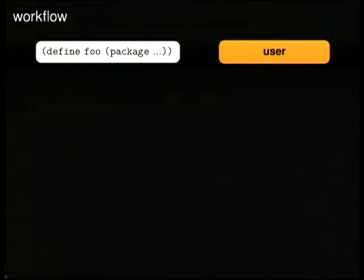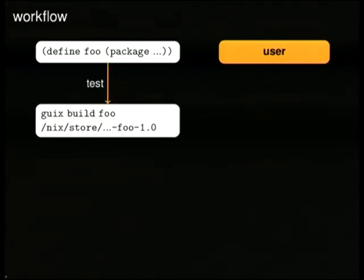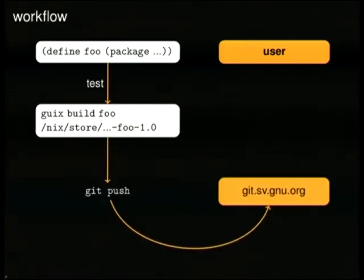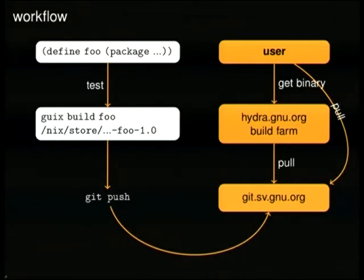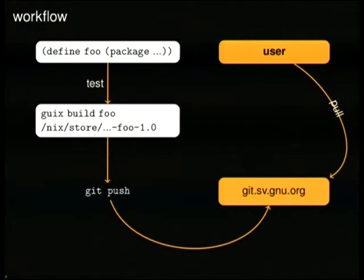This way of doing things also has an impact on the workflow between package definitions and users. Typically when you define a package, you can test it locally by running 'guix build' to make sure it actually builds and works. From there, you can push it to the git repository of Guix. Eventually, the build farm is going to pull from there and build it. Likewise, users can pull from the repo and build it locally, or use a binary build from the build farm. It's their choice — they don't have to use the build farm.